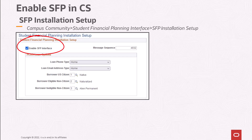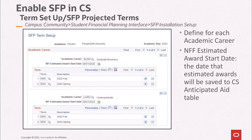Within the campus community menu under the student financial planning interface component, the SFP installation setup page contains the flag to enable the SFP interface. SFP uses projected enrollment information received in the SAFI message to package and award student aid. SFP projected term setup provides the framework for sending that projected enrollment data from CS to SFP by associating academic years and terms to academic careers. In this example of a traditional academic year, a summer term is not included, but projected units are included for a summer term if the student is term activated. The setup also includes an NFF or non-federal fund estimated award start date, which will determine when non-federal funds such as institutional scholarships will be saved to the CS anticipated aid table for an individual student.